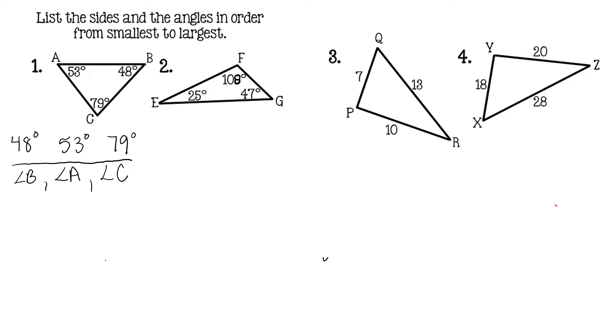Now do their sides. Their sides are always the opposite of the angle. So angle B's side will go first, which is side AC. Angle A's will go next, which is side CB or BC. And then angle C, the opposite side, is side AB.